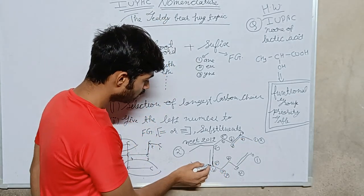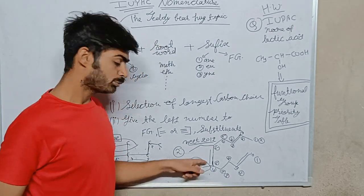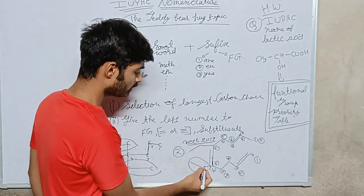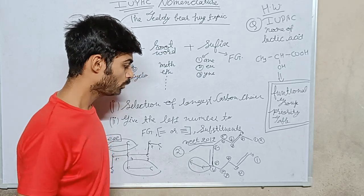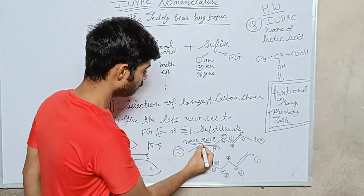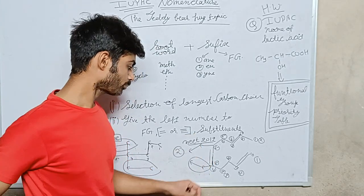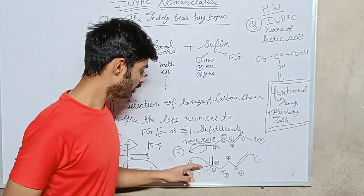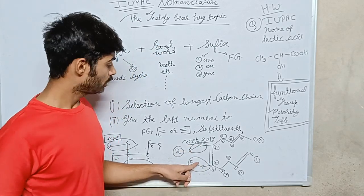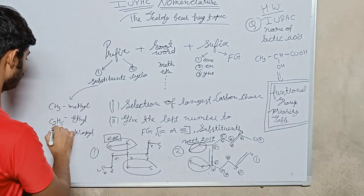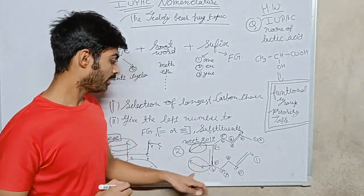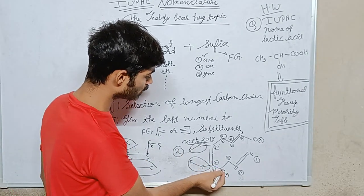So here a substituent is present. How many carbons in this substituent? 1 and 2. And here 1 and 2. So what is the name of this substituent? Meth, eth—ethyl. So here ethyl is present. And what is the name of this compound?